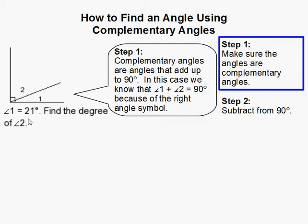We know that they add up to 90 degrees because they're both within this angle here, and we have this right angle symbol. So angle 1 and angle 2 must add up to 90 degrees.